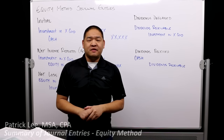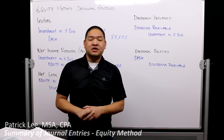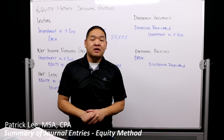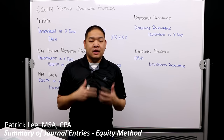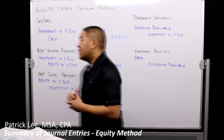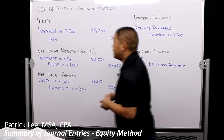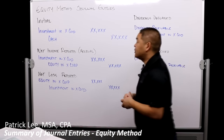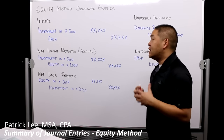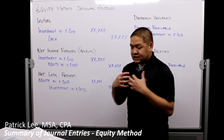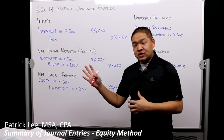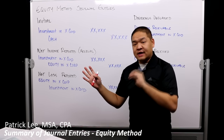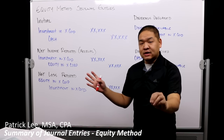In this lesson we're going to go over some of the journal entries you're going to encounter when it comes to the equity method and explain through these journal entries. The first journal entry is when we actually decide to invest in an investee — so an investor decides to invest in an investee.